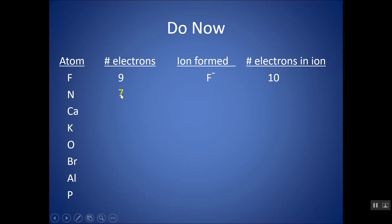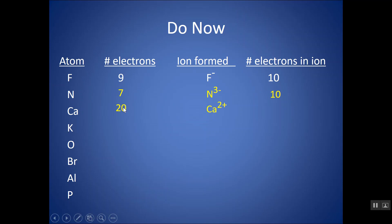Nitrogen has seven electrons as an atom. It would form a three minus charge because it's in group 15, gaining three electrons to have ten electrons — the same as the nearest noble gas, neon. Calcium as an atom has 20 electrons; as an ion it forms a two plus charge, loses two electrons, and now has 18 electrons — the same as argon. Potassium has 19 electrons, forms a one plus charge, and now has 18 electrons — again like the nearest noble gas, argon.